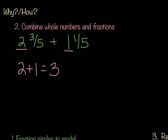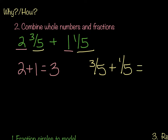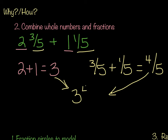Then we're going to take a look at the fractions. We have 3 fifths and 1 fifth. So over here I'm going to take 3 fifths plus 1 fifth. And when we add those together, it equals 4 fifths. So then I take my whole number and my fraction, and I make my mixed number, which gives me my answer of 3 and 4 fifths. So as you can see, we've got the same answer, but just using a different method.